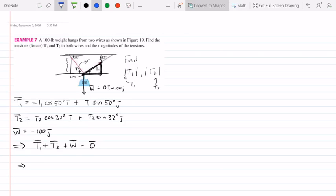That gives me an equation with two unknowns. If I add up the x's, I get minus T1 cosine of 50 degrees plus T2 cosine of 32 degrees, which equals zero.